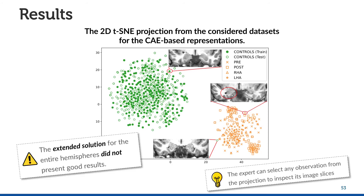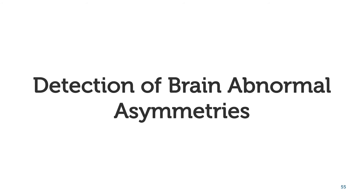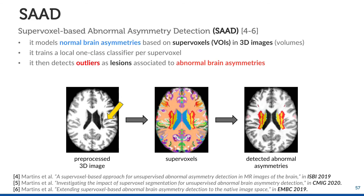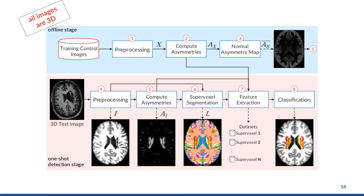However, the extended solution for the entire hemispheres did not present good results. We next tried a different approach to detect abnormal asymmetries in the whole hemispheres: the proposed method SAAD. SAAD models normal brain asymmetries based on supervoxels in 3D images, trains a local one-class classifier per supervoxel, and detects outliers as lesions associated with abnormal brain asymmetries.